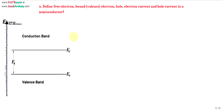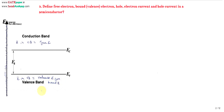Free electron is nothing but an electron in the conduction band. Electron in conduction band is called as free electron. Electron in valence band is called a valence electron, or it is also called as bound electron, because it is bounded by its parent atom.